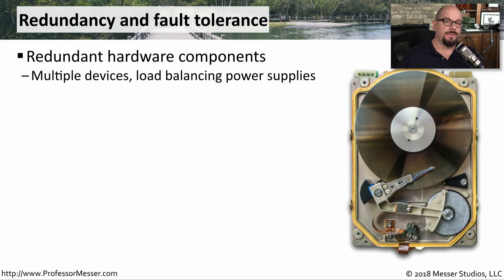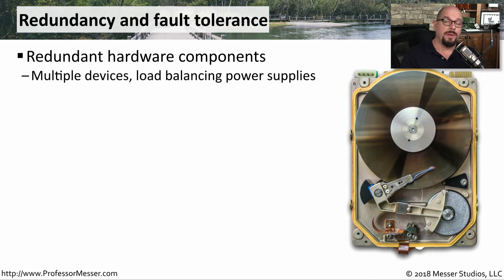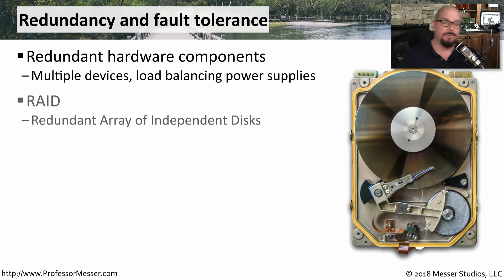We often implement this fault tolerance by using redundancy. We'll have an additional device either standing by or online, and if the first device fails, we can fail over to the secondary device. This means you might have separate power supplies within a single server, or you might build out two completely separate servers — one as your primary device and the other for redundancy. The redundant array of independent disks is a common way to set multiple drives inside a device and provide redundancy should any one of those drives fail.